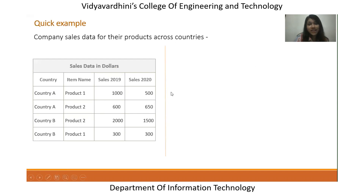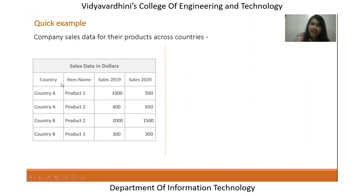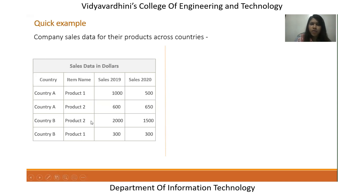Let me give a quick example before moving on to the benefits of data visualization. I have the sales data for company ABC, which has two products — product one and product two — and it sells across two countries, country A and country B. I have the sales data in dollars. For 2019 and 2020, country A product one had $1,000 in sales in 2019, whereas in 2020 it has reduced to $500. Similarly, we have data for country B and other products. This is a simple table with only four rows of data.